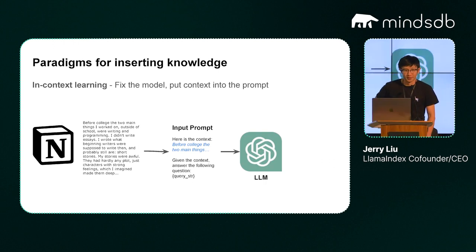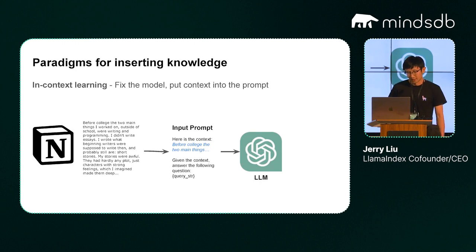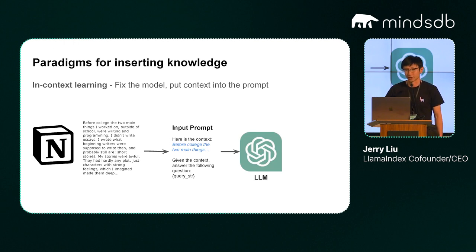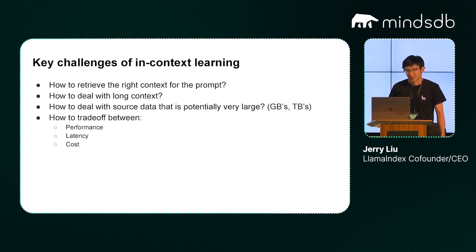If you want to do ChatGPT over your private data, you do something like in-context learning. You set up some retrieval augmented generation system where you have a knowledge corpus, put it in maybe a vector database, and then you have an input prompt that says here's some context. Do a retrieval on top of the knowledge corpus, and then you're able to answer the following question to give you the response. General questions to think about: what exactly is a retrieval model? What exactly is a synthesis model? How do you retrieve the right context for the prompts?